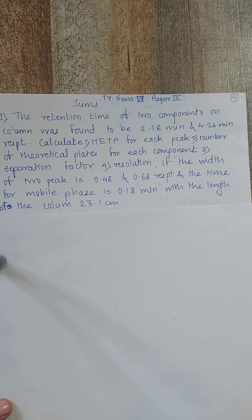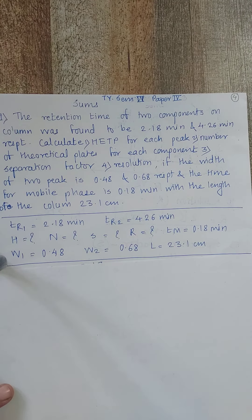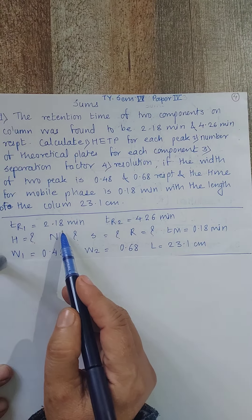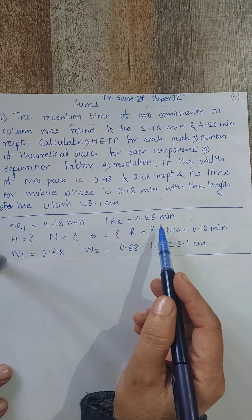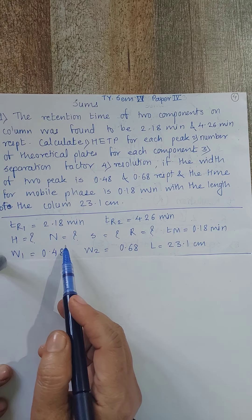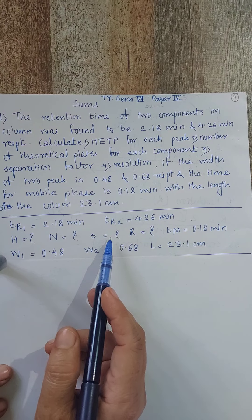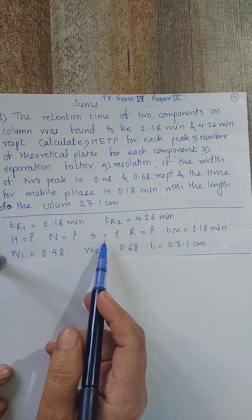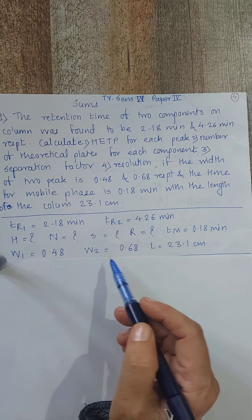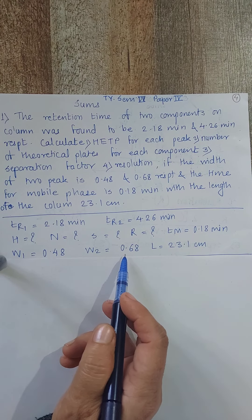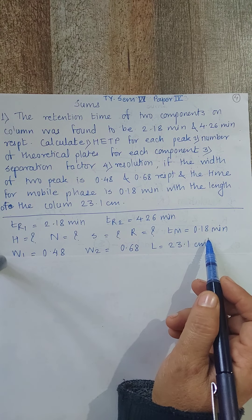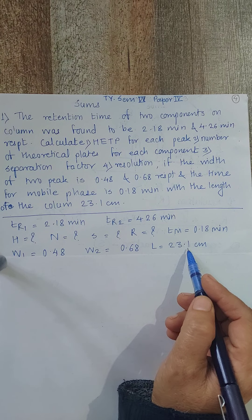The time for the mobile phase is 0.18 minutes and the length of the column is 23.1 cm. Given data: TR1 = 2.18 min, TR2 = 4.26 min. Peak widths: W1 = 0.48, W2 = 0.68. TM = 0.18 min, L = 23.1 cm. We need to find HETP, number of plates, separation factor, and resolution.